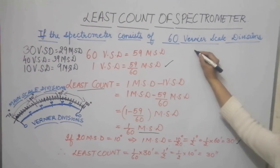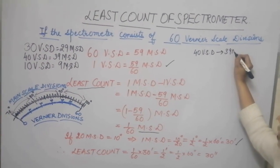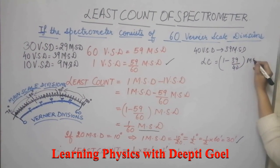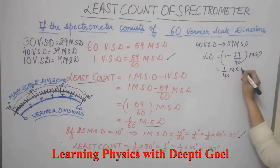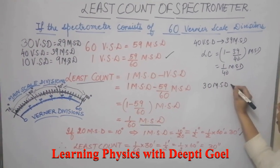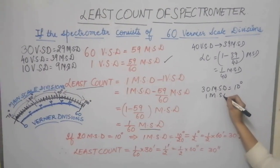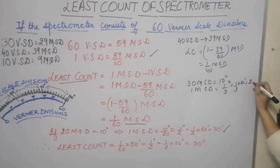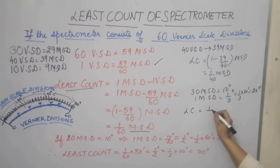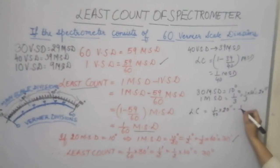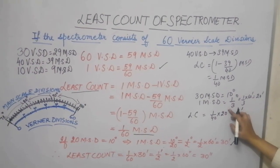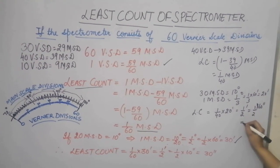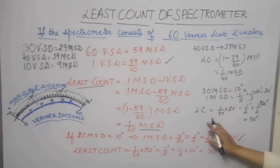Suppose you have 40 vernier scale divisions. Then 40 coincides with 39 main scale divisions, so least count = 1 − 39/40 MSD = 1/40 MSD. If 30 main scale divisions equal 10 degrees, then 1 MSD = 1/3 degree = 20 minutes. So least count = 1/40 × 20 minutes = half a minute = 30 seconds.